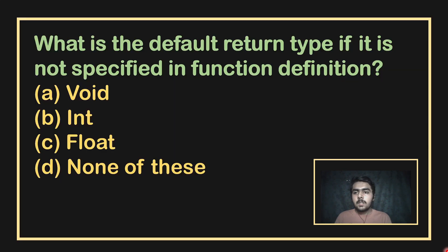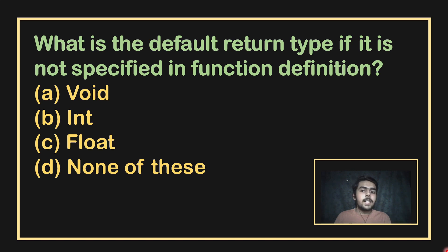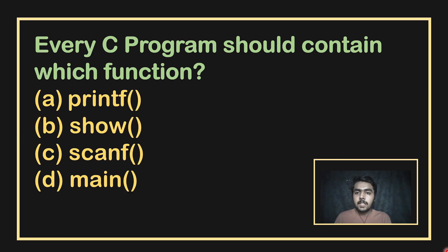The first question is: what is the default return type if it is not specified in a function definition? By default, the function assumes the data type as int if it is not mentioned or specified. So the answer is int.